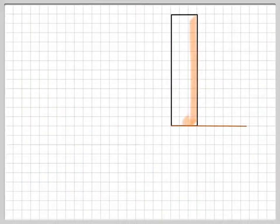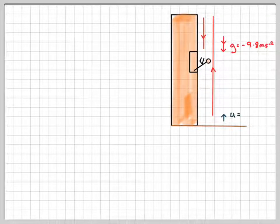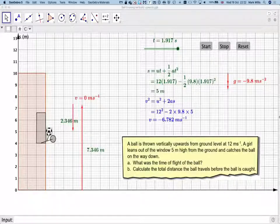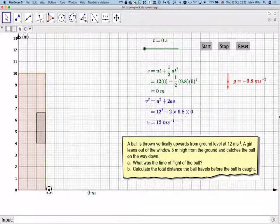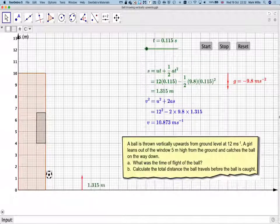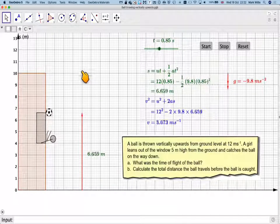To calculate the total distance. There's our diagrams. Let's just go back to this applet again and just reset it. So to calculate the total distance, we need to find how far it goes up. So we need to find the greatest height.